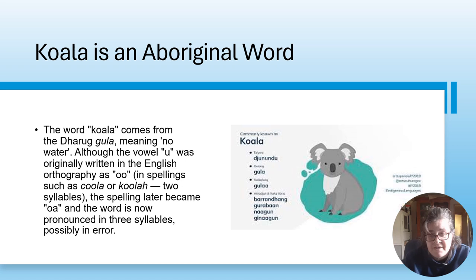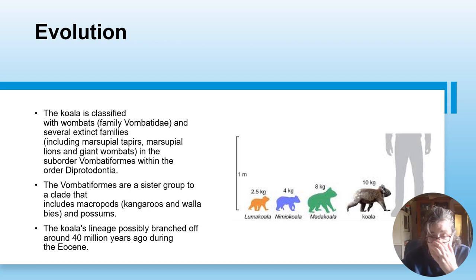Koala is an Aboriginal word - it comes from the Dharug word meaning 'no water', although the word was originally written in English in various spellings such as 'coola' or 'kooala'. The spelling became 'koala' and the word is now pronounced in two or three syllables. This is how koalas possibly evolved over time.